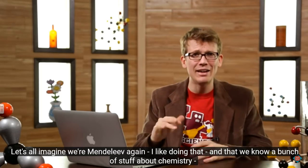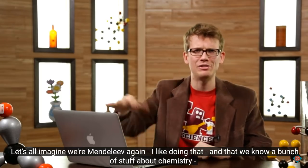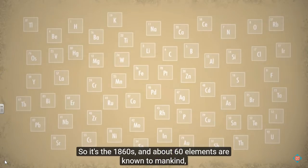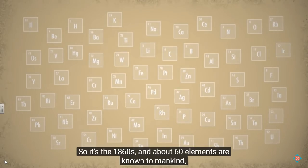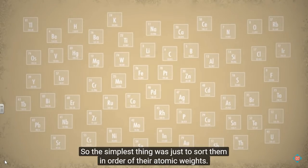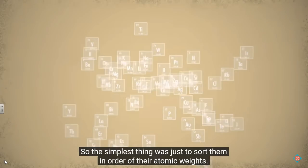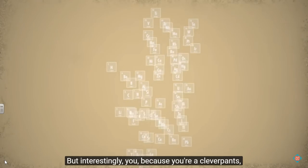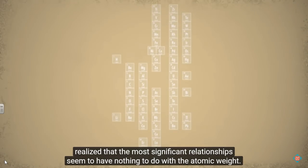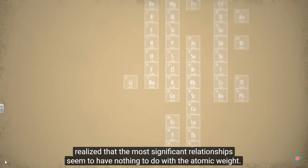Let's all imagine we're Mendeleev again. I like doing that. And that we know a bunch of stuff about chemistry, which, you know, you don't yet. Yet! But we're imagining. So it's the 1860s, and about 60 elements are known to mankind and their atomic weights are mostly known as well. So the simplest thing was just to sort them in order of their atomic weights. But interestingly, you, because you're clever pants, realized that the most significant relationship seemed to have nothing to do with the atomic weight.